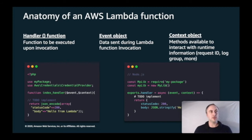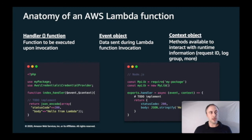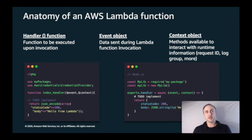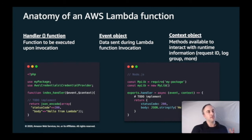There are some key parts of Lambda anatomy you need to understand. The first is the Lambda function handler — this is the starting point of your Lambda function, the first function that runs when your Lambda is invoked. Provided to that handler are two objects: the event object and the context object. The event object is the first argument and contains information about the event in JSON format — for example, if invoked by an HTTP API, it will contain the body and headers of that request.